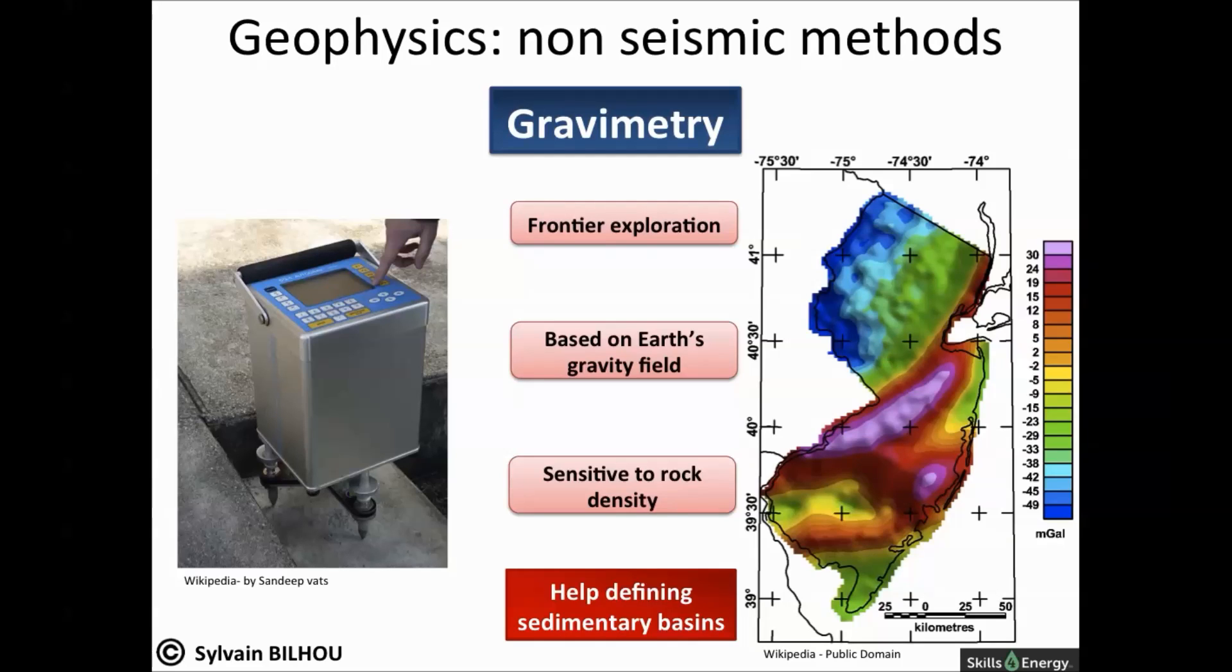The gravity meter is very sensitive to the density of the rock in the subsurface. It measures the gravity in units of acceleration called milligals. Anomalies can help to distinguish which sedimentary basins differ in density from that of the surrounding region.